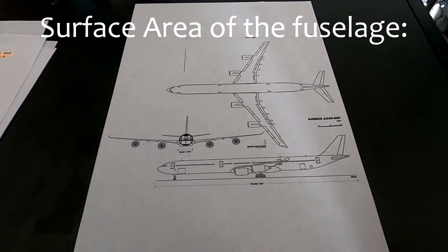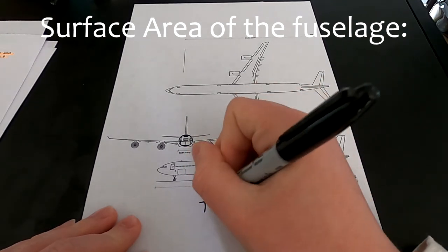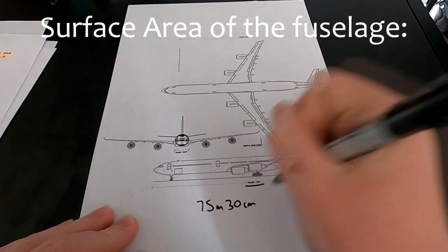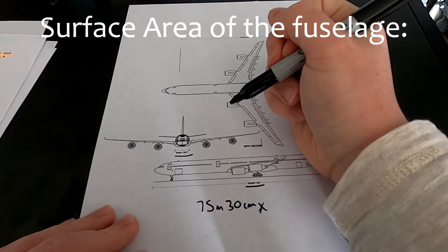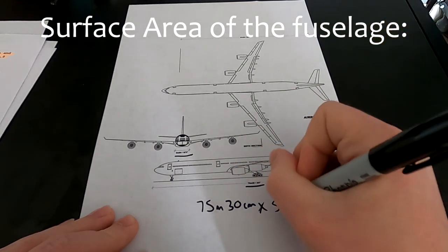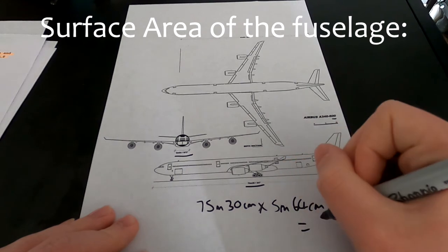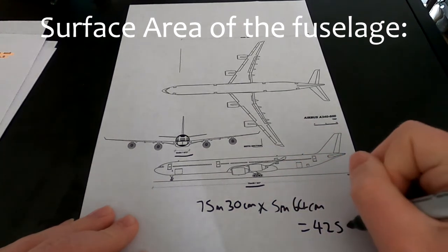We just take the 75 meters 30 centimeters here. 75 meters 30 centimeters. Multiply that by the 5 meters 64 centimeters. And we get rounded up, it's 425 meters squared.